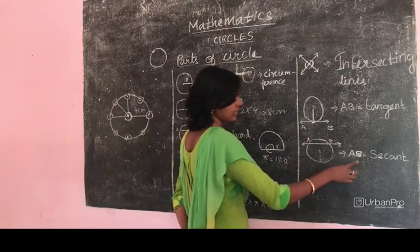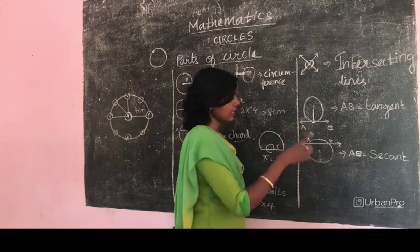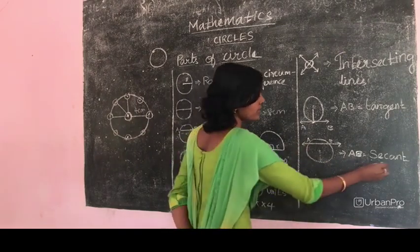Next one is the secant. Secant is the intersection of a line and a circle in two different points. That is called secant.